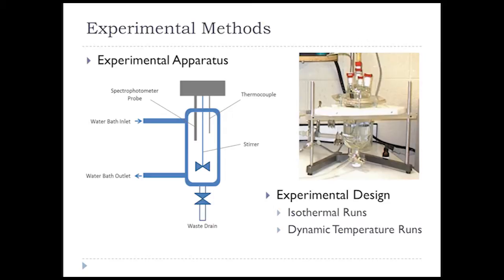Here's the experimental apparatus — it's a little benchtop experiment in the unit operations lab. You have a thermocouple which records the temperature, and also a spectrophotometer probe that measures the absorbance of light, which is correlated to the concentration of the colored species. You also have a water bath inlet and outlet used for temperature control — you can dial in the set point and it will heat or cool the reactor to attain a different temperature. A stirrer maintains constant concentration throughout the reactor, and the waste drain is used to drain once the reaction is done.